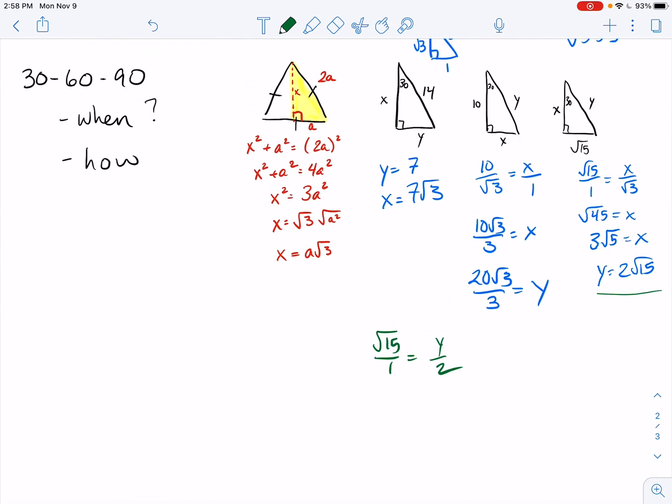So make sure, make sure if you see an equilateral triangle, then you know that you can drop it in altitude and get a 30, 60, 90. And what else did I want to say about that? Don't use this unless you know your angles are 30 and 60. That's the biggest mistake I see.